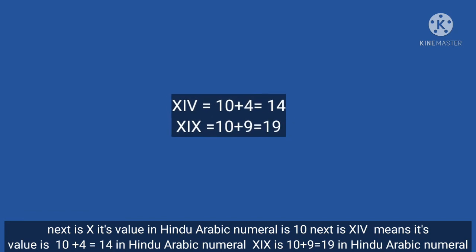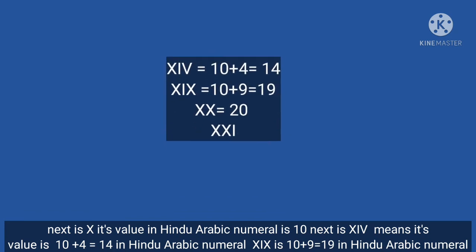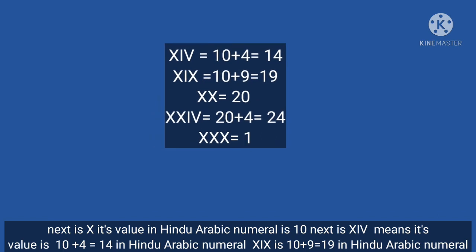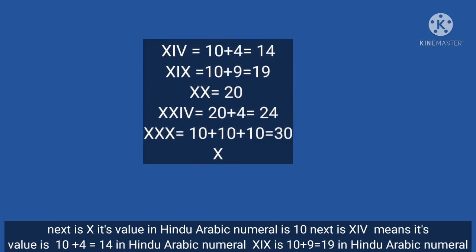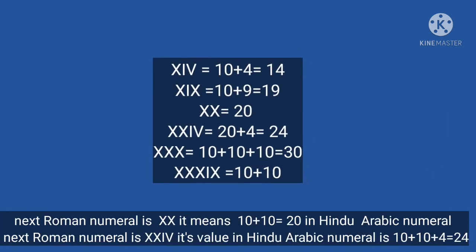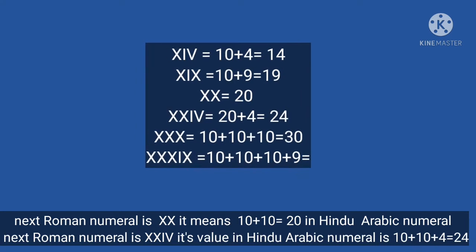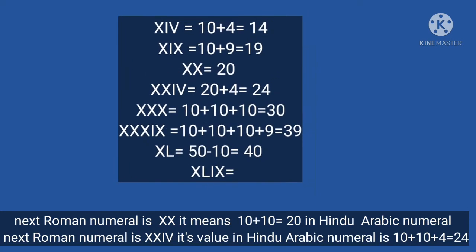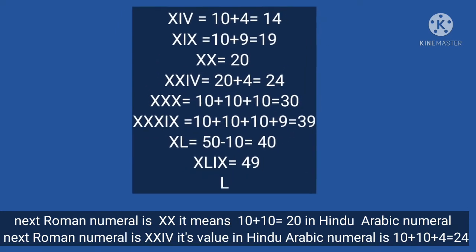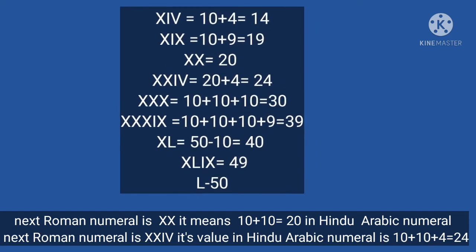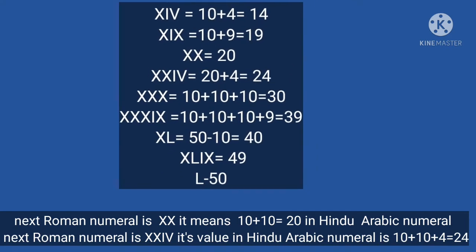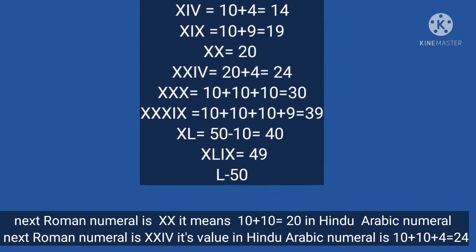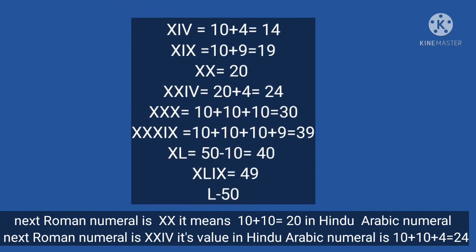XIX is 10 plus 9 equals 19 in Hindu-Arabic numeral. Next Roman numeral is XX — it means 10 plus 10 equals 20 in Hindu-Arabic numeral. Next Roman numeral is XXIV. Its value in Hindu-Arabic numeral is 10 plus 10 plus 4 equals 24.